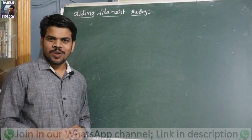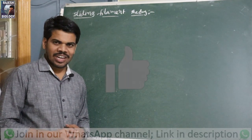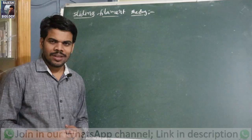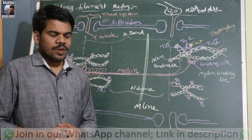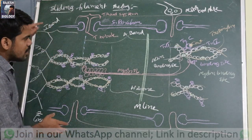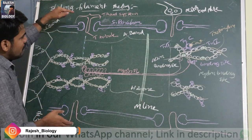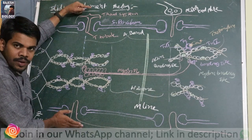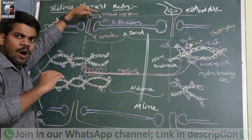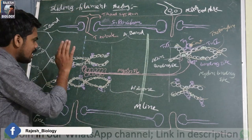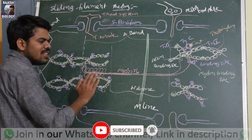Hi, welcome to our channel Rajesh Biology. I am Rajesh MSA Jowalaji. Today our topic is the mechanism of muscle contraction, also known as sliding filament theory. I'll draw a rough diagram of a muscle fiber. Within this muscle fiber there are so many myofibrils, but for better understanding I remove all the myofibrils except one — that one myofibril is what I draw here.